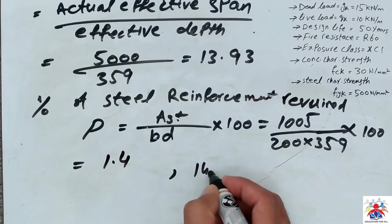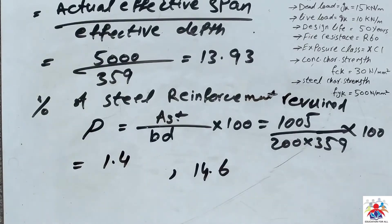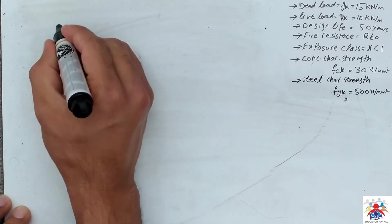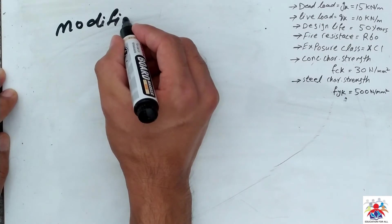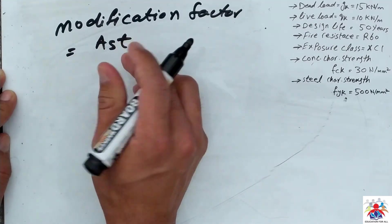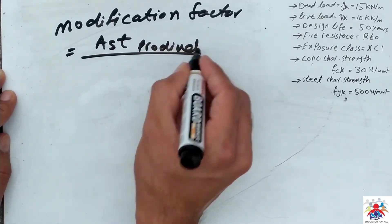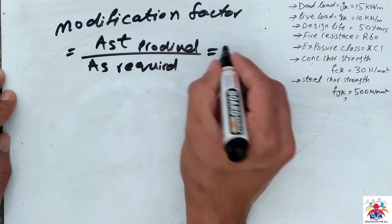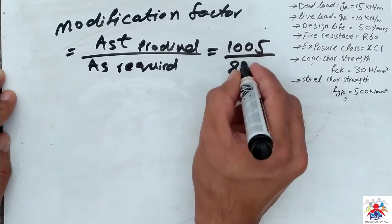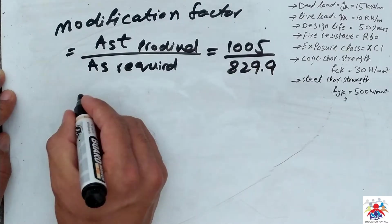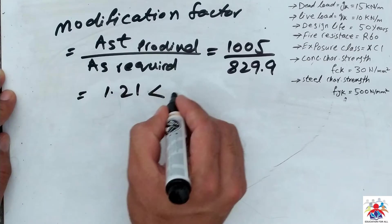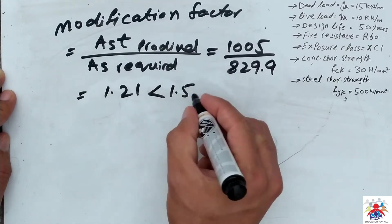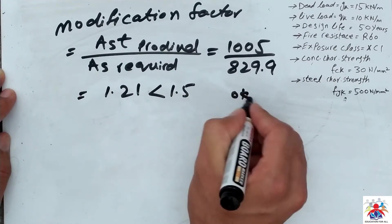We now calculate the modification factor. The modification factor equals the area of steel provided divided by the area of steel required. The area provided from the table is 1005 mm² and the required area is what we calculated with the formula. The result is 1.21, which is less than the maximum permitted value of 1.5, so we are okay.